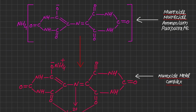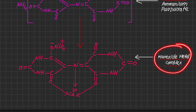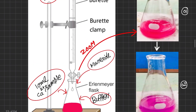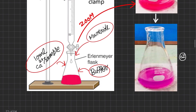This slide explains the color change chemistry. The indicator muroxide is also called muricide, ammonium purpurate, or ammonium salt of purpuric acid. In its purest form it is bright purple. When it forms a chelated complex with calcium ions, the muroxide-metal complex changes its color and appears rose red.